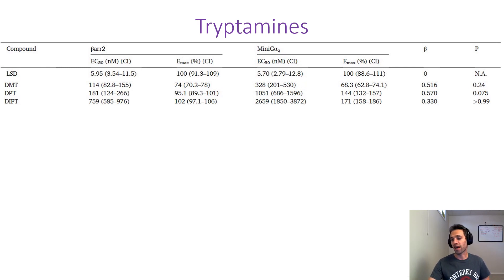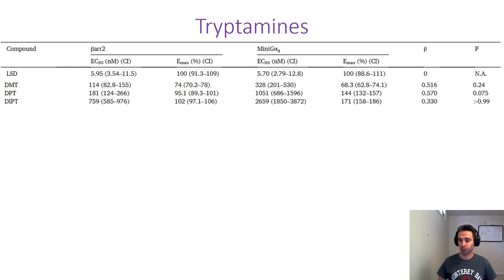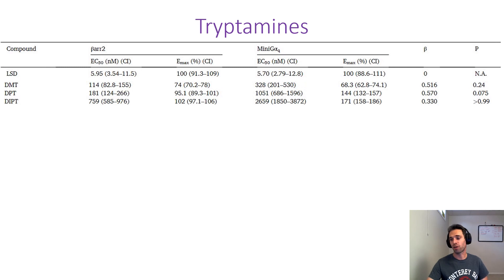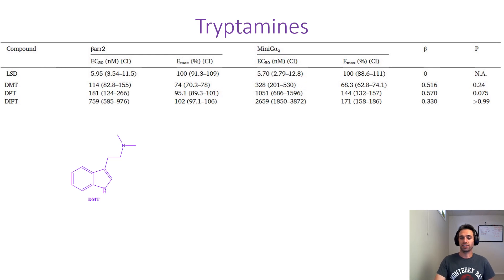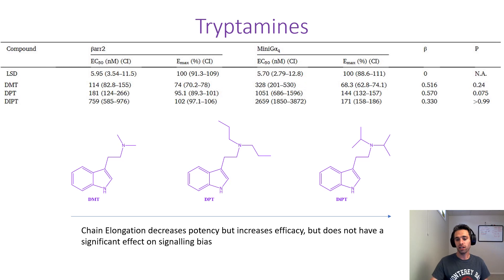We also see this beta factor. A beta factor of zero indicates no preferential pathway, which is what LSD shows. A positive beta factor denotes a preferential preference for the beta-arrestin pathway, while a negative value denotes a preference for the G protein pathway. All of these values being positive denote a preference for the beta-arrestin pathway. In summary, as we elongate the chain we decrease potency but increase efficacy, and this does not have a significant effect on signaling bias — the bias remains beta-arrestin biased throughout.